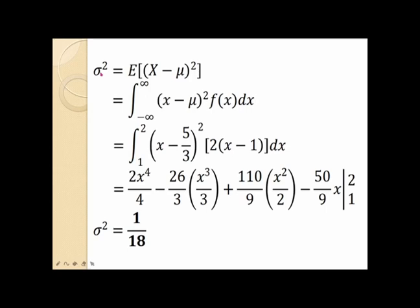After computing the mean, we can now calculate the variance. Since the random variable X is continuous, we use this formula: sigma squared is equal to the integral from negative infinity to positive infinity of (X minus mu) quantity squared times F of X dx. So sigma squared is the integral from 1 to 2 of (X minus five-thirds) squared times 2 times (X minus 1) dx, where five-thirds is the mean and 2(X minus 1) is the probability density function. Performing the integration and evaluating at X equals 1 and X equals 2, the variance of X is found to be equal to 1 over 18.